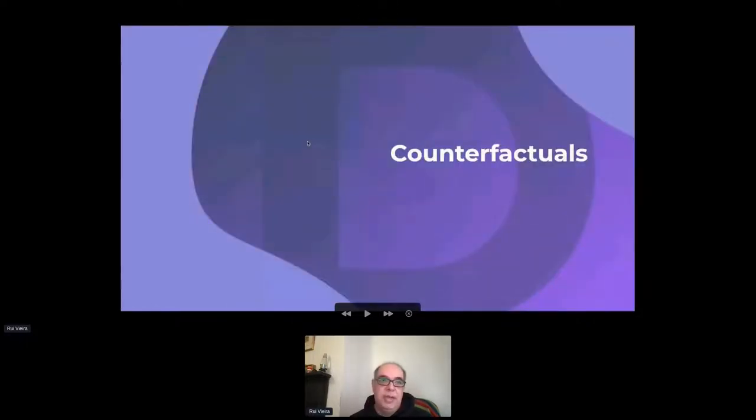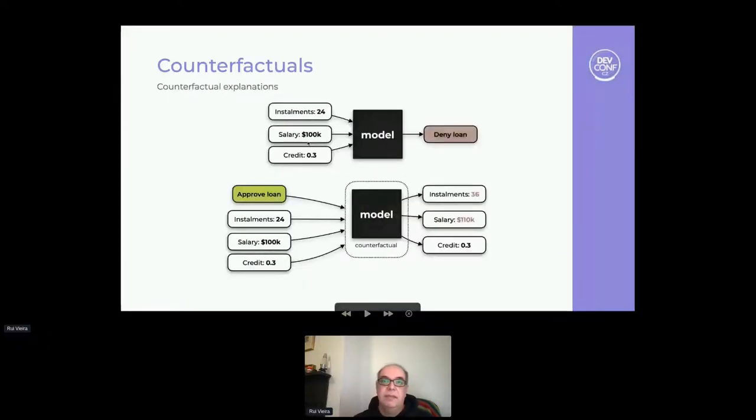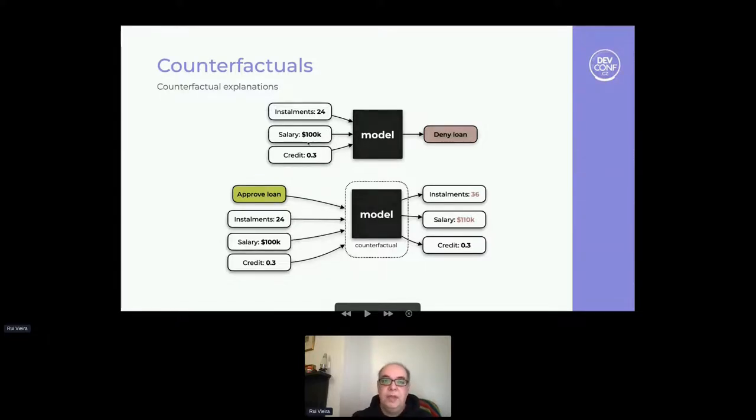The second explainability method I'd like to talk about is counterfactuals. Counterfactuals answer the question in the form of 'to get this specific outcome, what should my inputs be?' Let's say, taking again the example of the loan approval model, if for a specific input we have a prediction that the loan is not approved, counterfactuals will provide us with an alternative set of inputs which will lead to the desired outcome - that is, the approved loan.